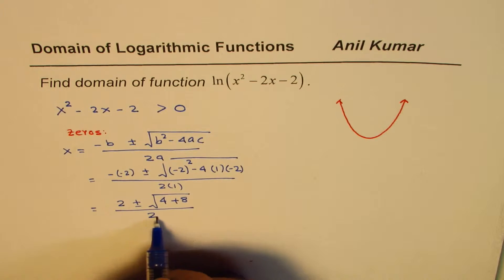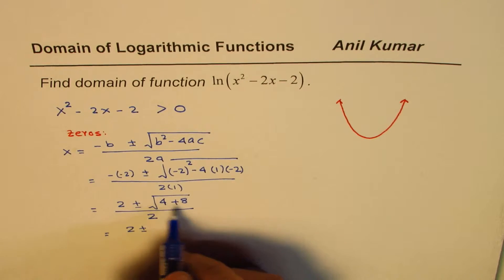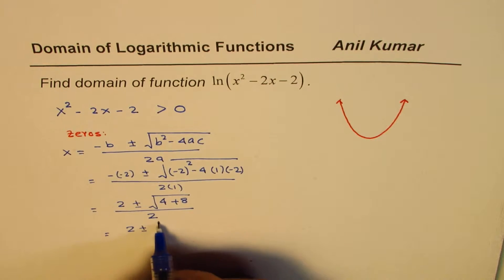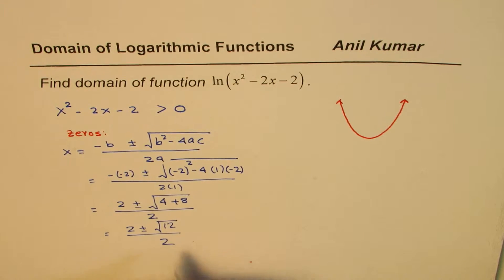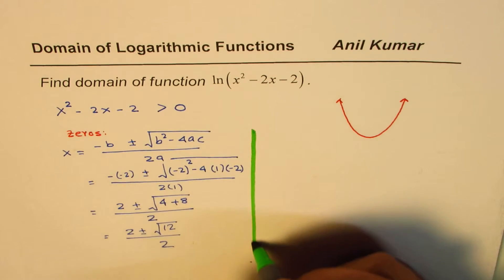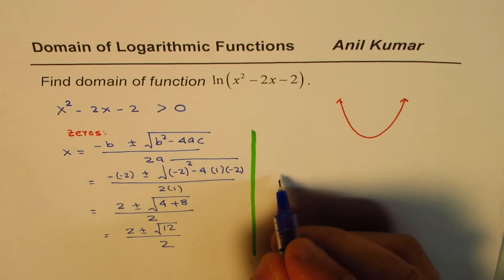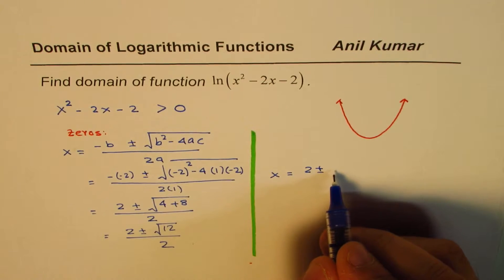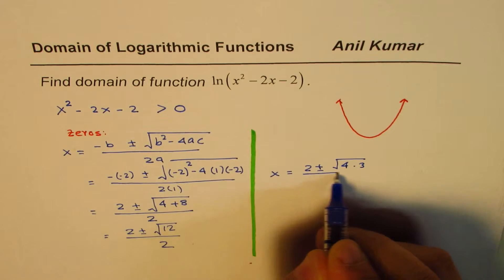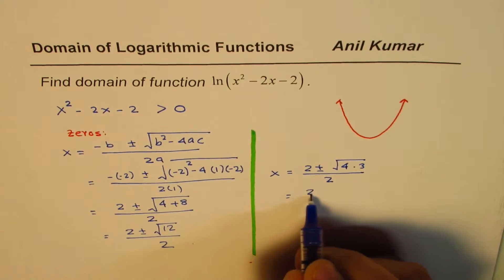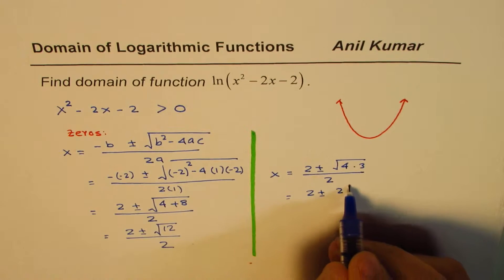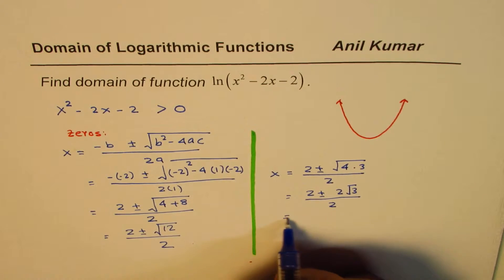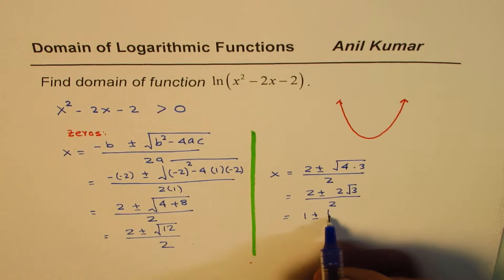So we get 2 ± √12, divided by 2. Now √12 can be written as √(4 × 3), which equals 2√3. So the expression becomes (2 ± 2√3) / 2, and dividing by 2 we get x = 1 ± √3.